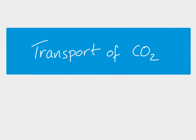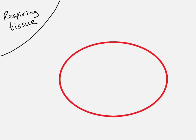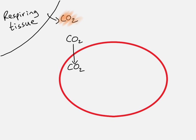This video is looking at how carbon dioxide is transported around the body. Respiring tissue is doing respiration, and that respiration releases carbon dioxide. A small amount of that carbon dioxide is actually transported in solution — dissolved in the blood plasma itself.